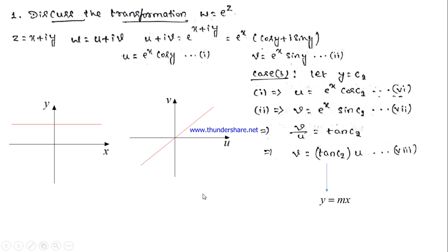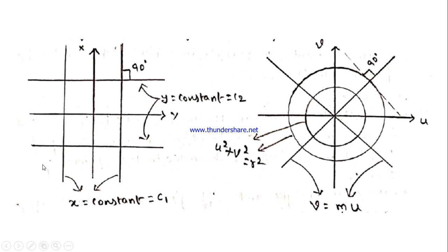Putting these results together: the vertical lines x = c1 and the horizontal lines y = c2 in the z-plane map to concentric circles and radial lines through the origin in the w-plane, respectively. The angle between the original curves is 90°, and the angle between the transformed curves is also 90°, which confirms the conformality of w = e^z. We can also note that a conformal transformation always transforms orthogonal curves into orthogonal curves.